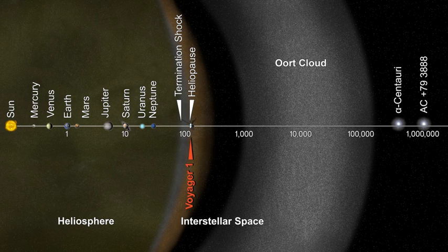The Kuiper belt and the scattered disk, the other two reservoirs of trans-Neptunian objects, are less than 1,000th as far from the Sun as the Oort cloud. The outer limit of the Oort cloud defines the cosmographical boundary of the solar system and the extent of the Sun's Hill sphere. The outer Oort cloud is only loosely bound to the solar system, and thus is easily affected by the gravitational pull both of passing stars and of the Milky Way itself.